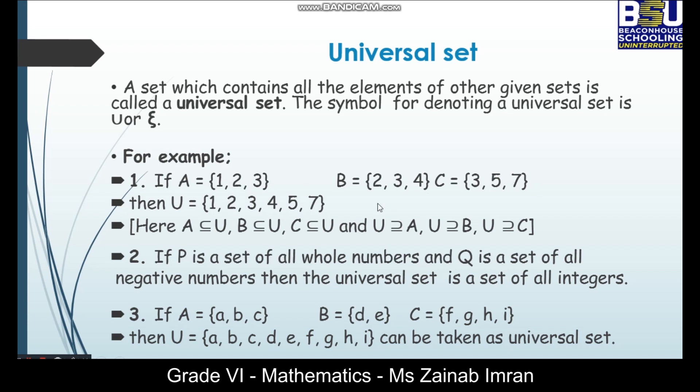What are the elements in the universal set? So universal set equals to 1, 2, 3, 4, 5 and 7. It contains all the elements of A, B and C.